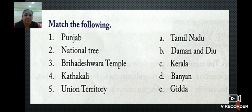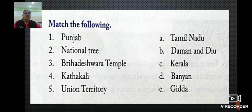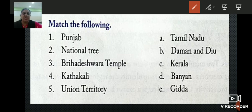Next is match the following. Two columns are given: Punjab, National Tree, Brihadeshwara Temple, Kathakali, Union Territory — and on the other side: Tamil Nadu, Daman and Diu, Kerala, Banyan, Giddha. The first one is Punjab. Giddha is the folk dance and traditional dance of Punjab. So we will match Punjab to E — Giddha.